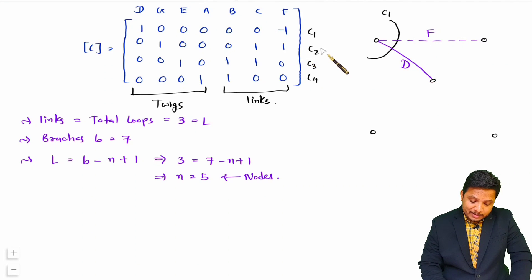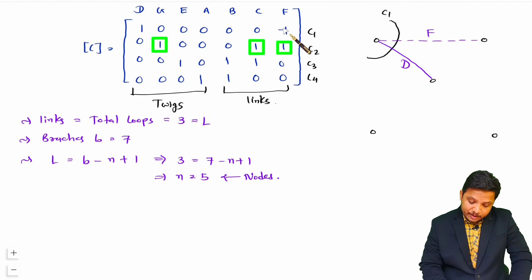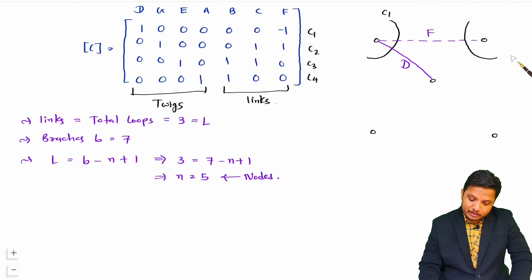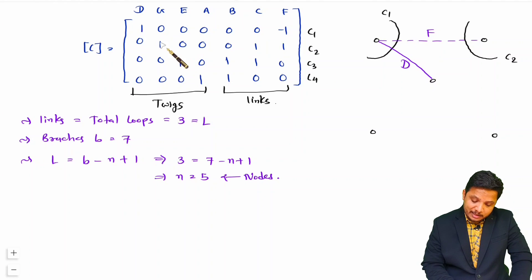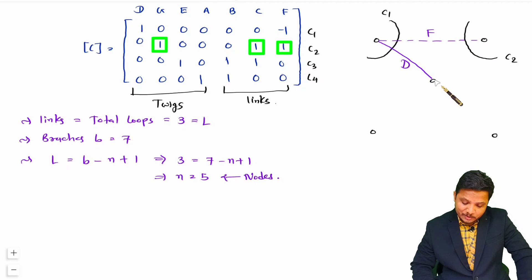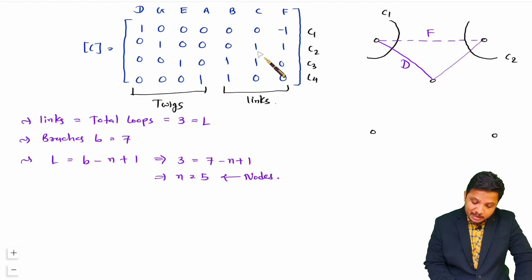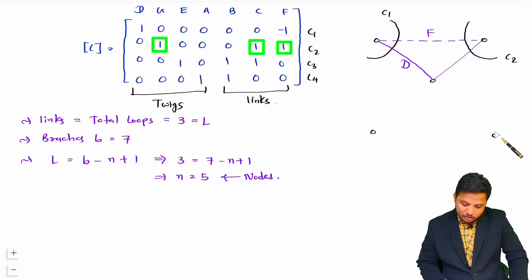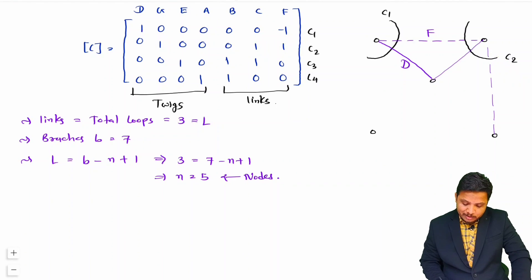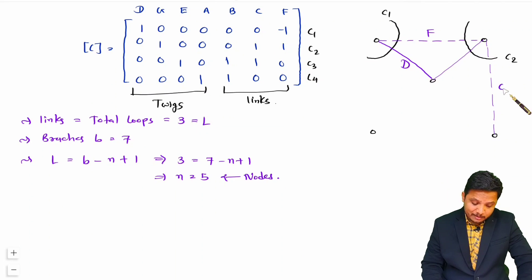Now let us see what is happening with c2. If you observe c2, it is having f, c, and g. F is already connected here, so obviously I should be providing c2 here. With c2 we are having one twig that is g, so connect g towards center so it will not interfere with the rest of the diagram. The other link is c, so let us connect c with this node. So with c2 we are having c here and g here as the twig.